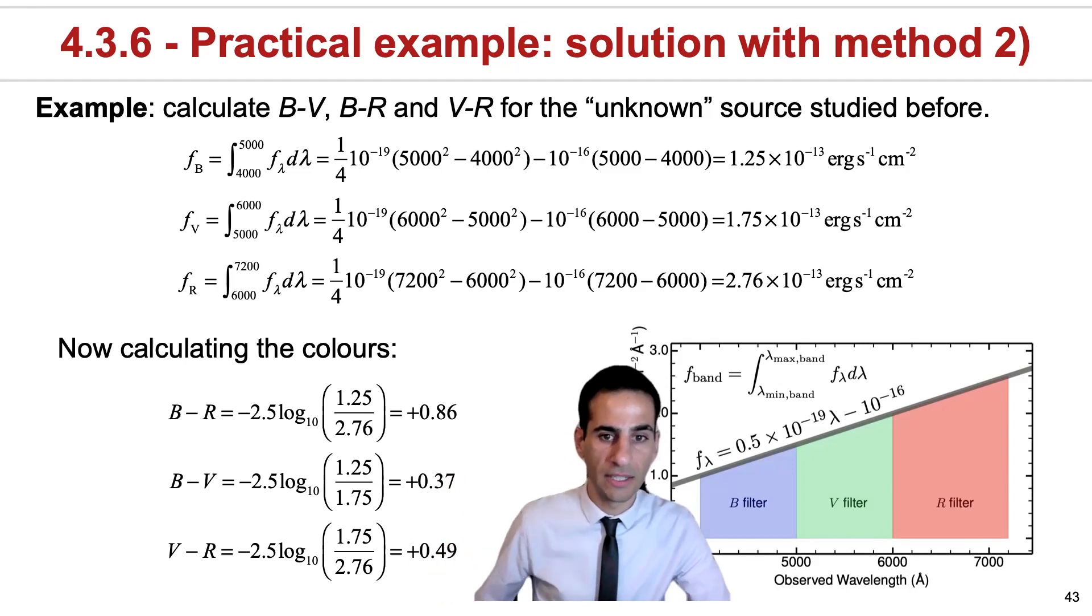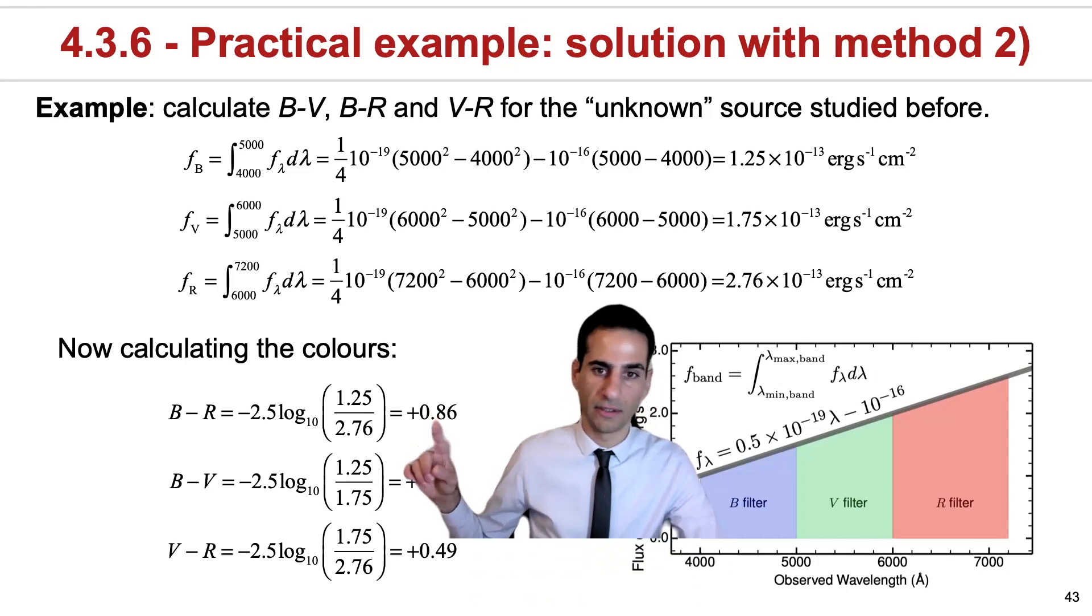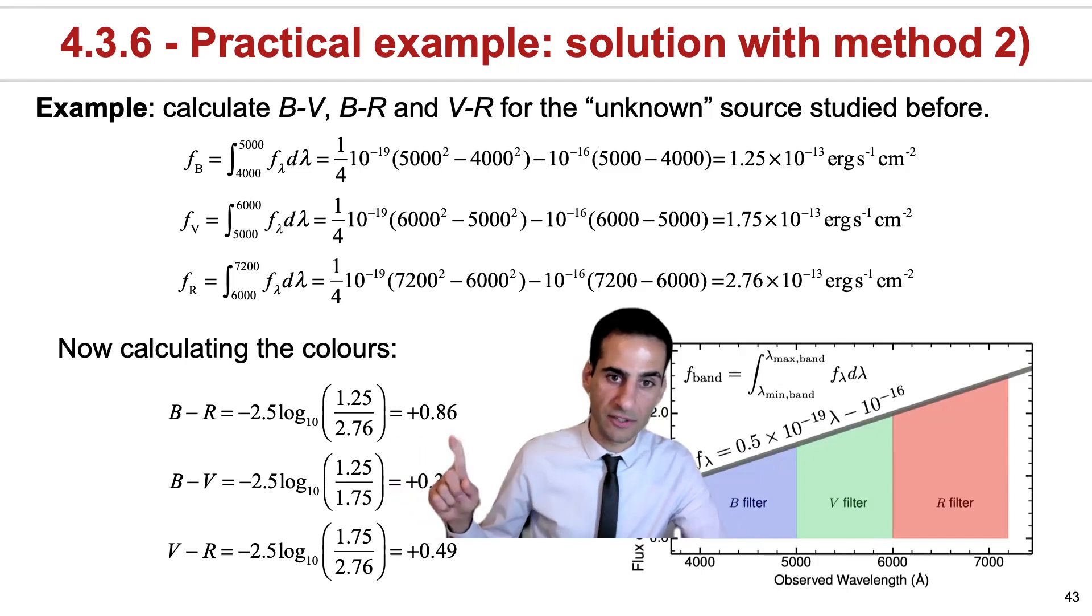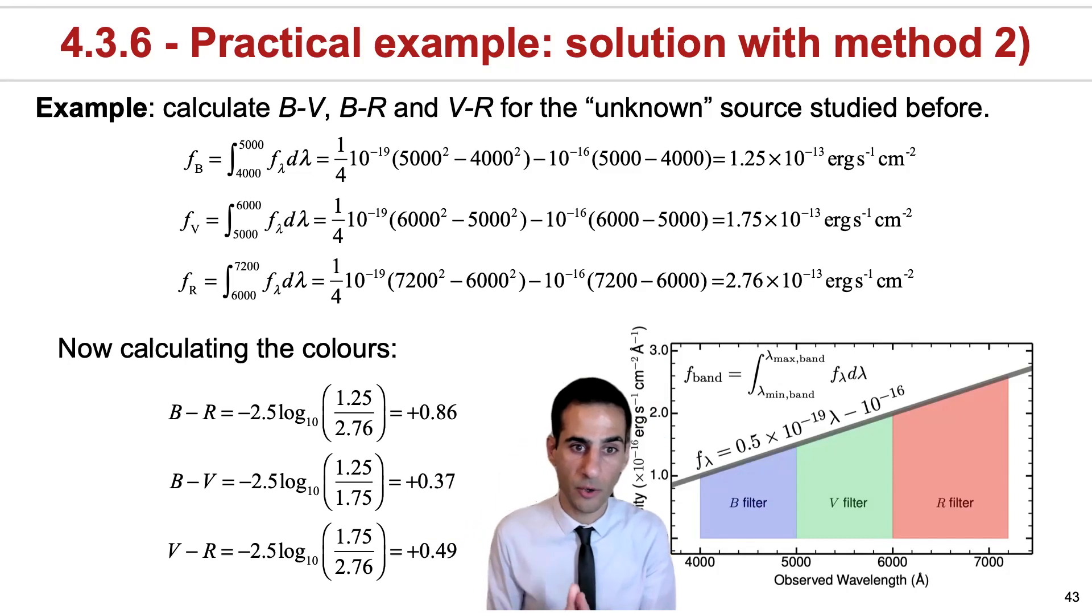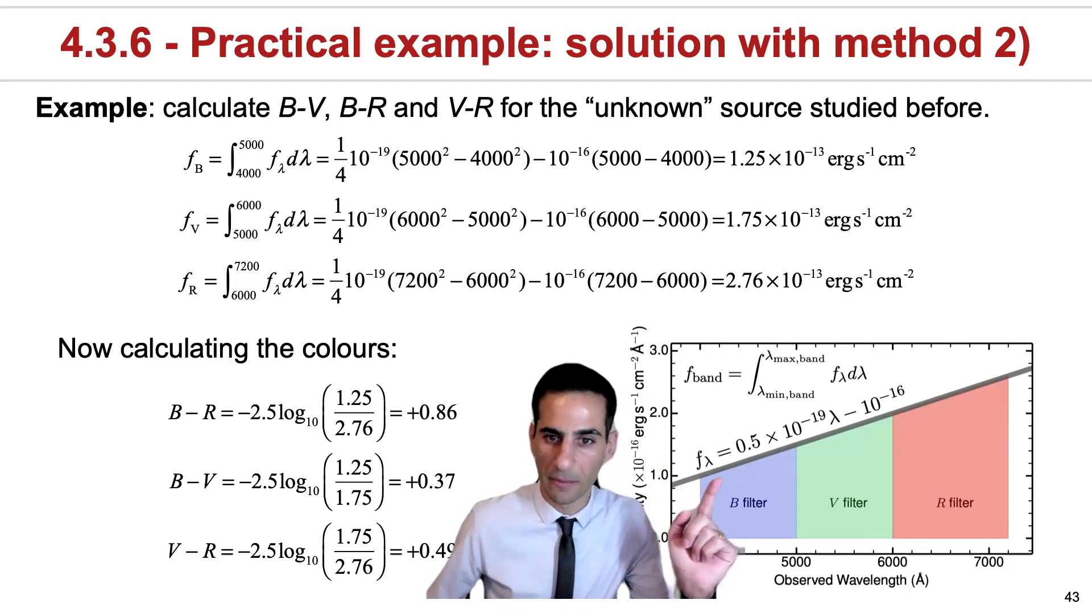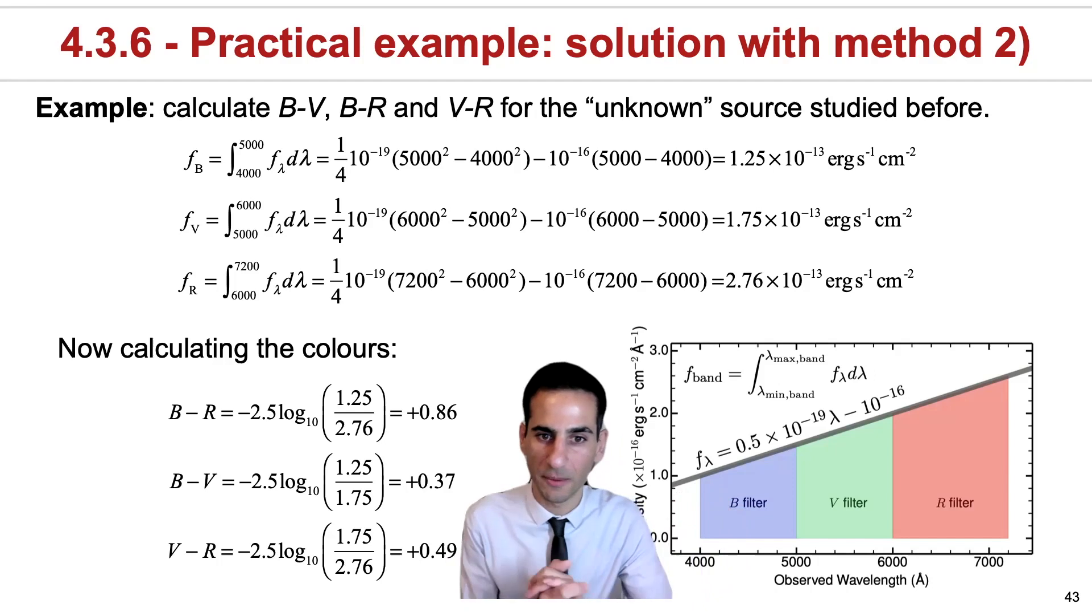Also, the longest baseline—shortest wavelength minus longest wavelength—gives you the highest color or magnitude difference. It's important to note that even though this is the same source, and if you look at the spectrum, it's not necessarily redder or more inclined at any specific wavelength. But because of the definition,